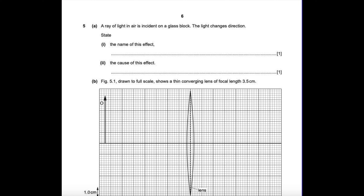A ray of light in air is incident on a glass block and the light changes direction. State the name of this effect. Refraction of light is the change of the light's direction when it moves from one medium into another medium. These two mediums are different in their densities, so it will be refraction. The cause of this effect: the reason for refraction is the change of the speed of light between different mediums, and also a change in the refractive index of the medium.